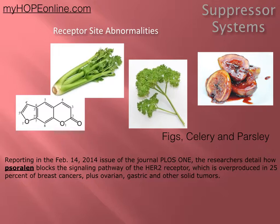There are multiple studies about the specific chemical in celery, parsley, and figs that is very beneficial to block the signaling pathway of the HER2 receptors — that's another benefit of juicing. So our juice base is carrots, apples, and celery, and we add beets and parsley to the juice. You have a great HER2-positive signal blocker.